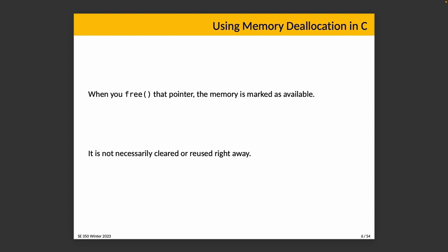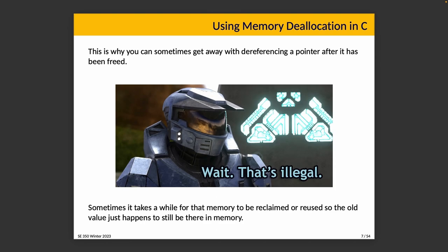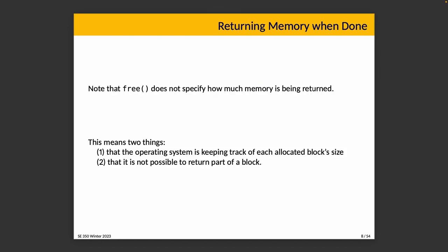Memory is allocated, and when we call free on that pointer, all that happens is the memory there is marked as available. This is why you can sometimes get away with dereferencing a pointer after it's been freed — as SimCity once did — because it takes a while for the memory to be reclaimed or reused. Also, free doesn't specify how much memory is being returned, which implies: the OS is responsible for tracking each block's size, and there is no way to return just part of a block.